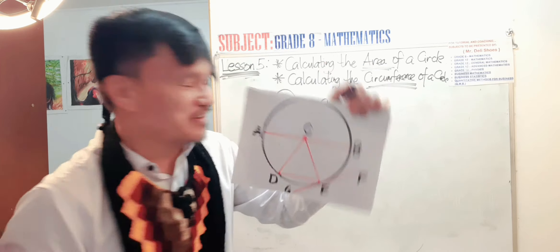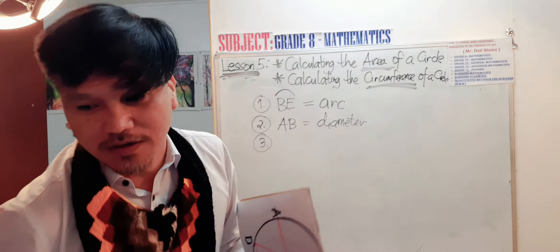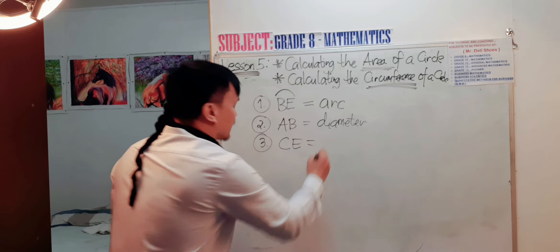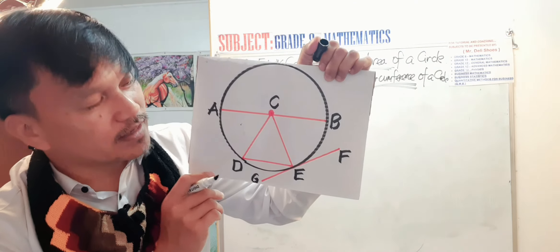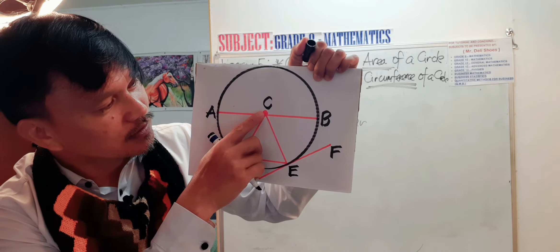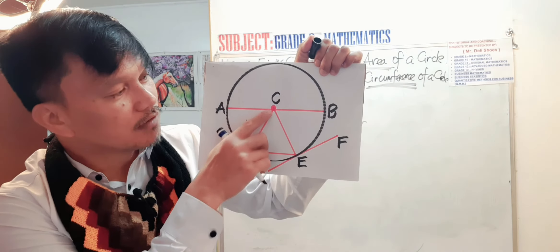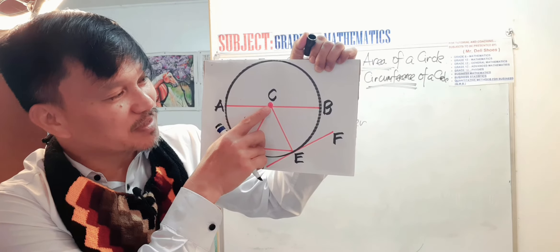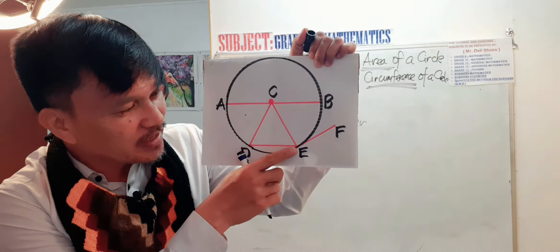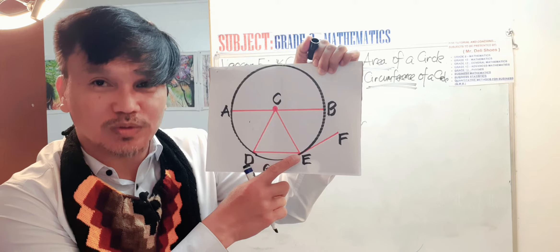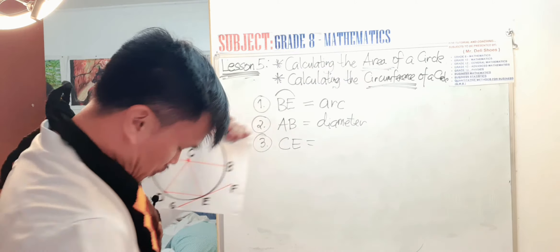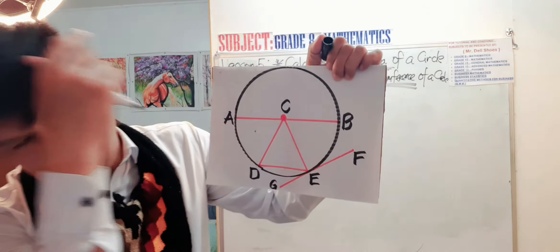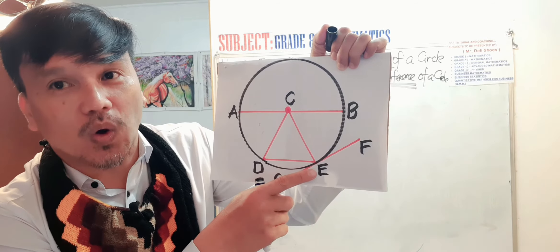Question number three: what does C-E called? From C towards E — from the center of the circle to one point on the circumference of the circle — it is called a radius. Line segment C-E is called a radius.